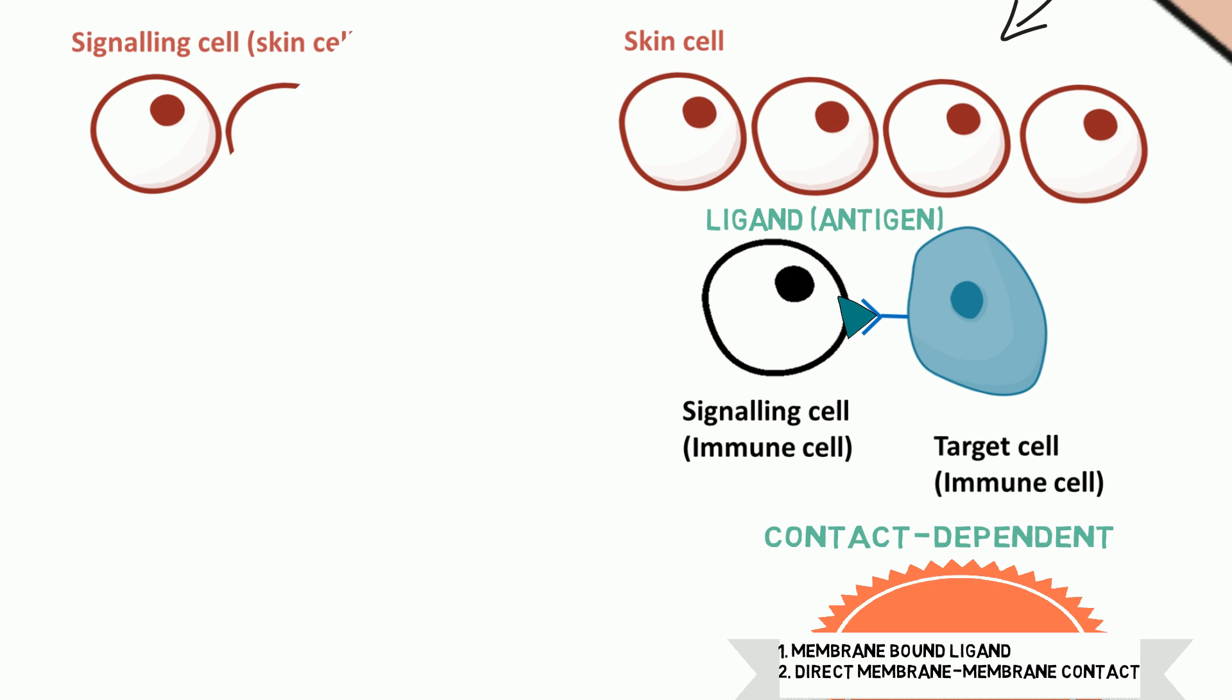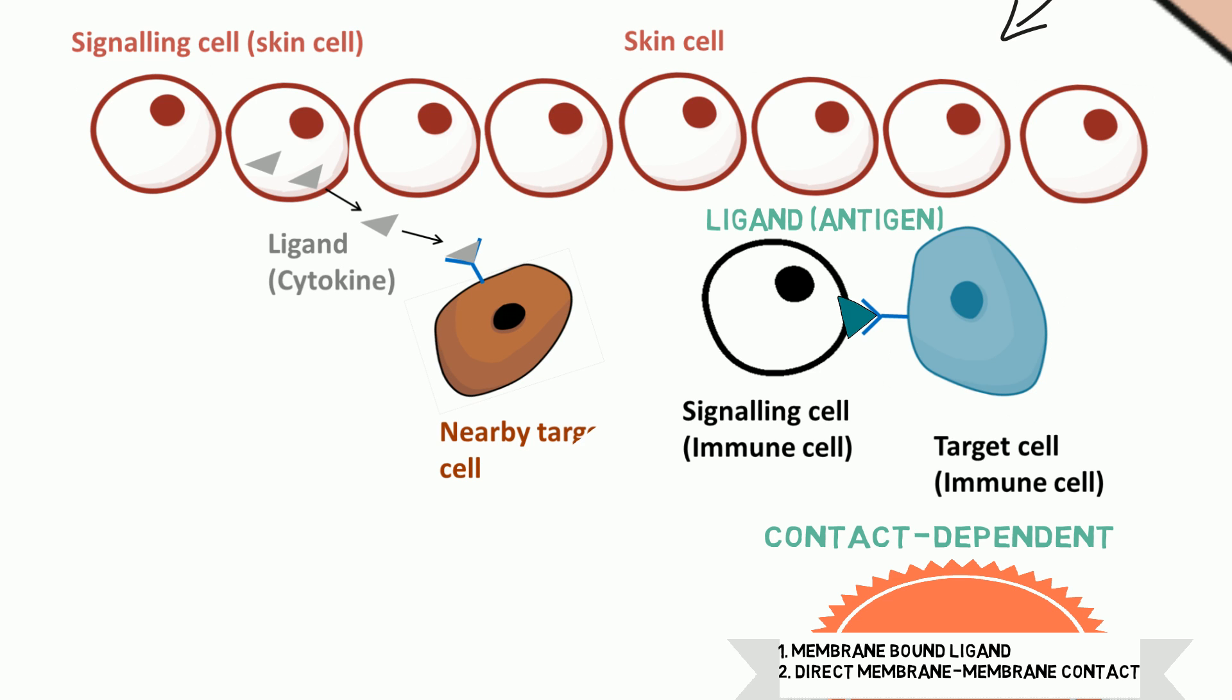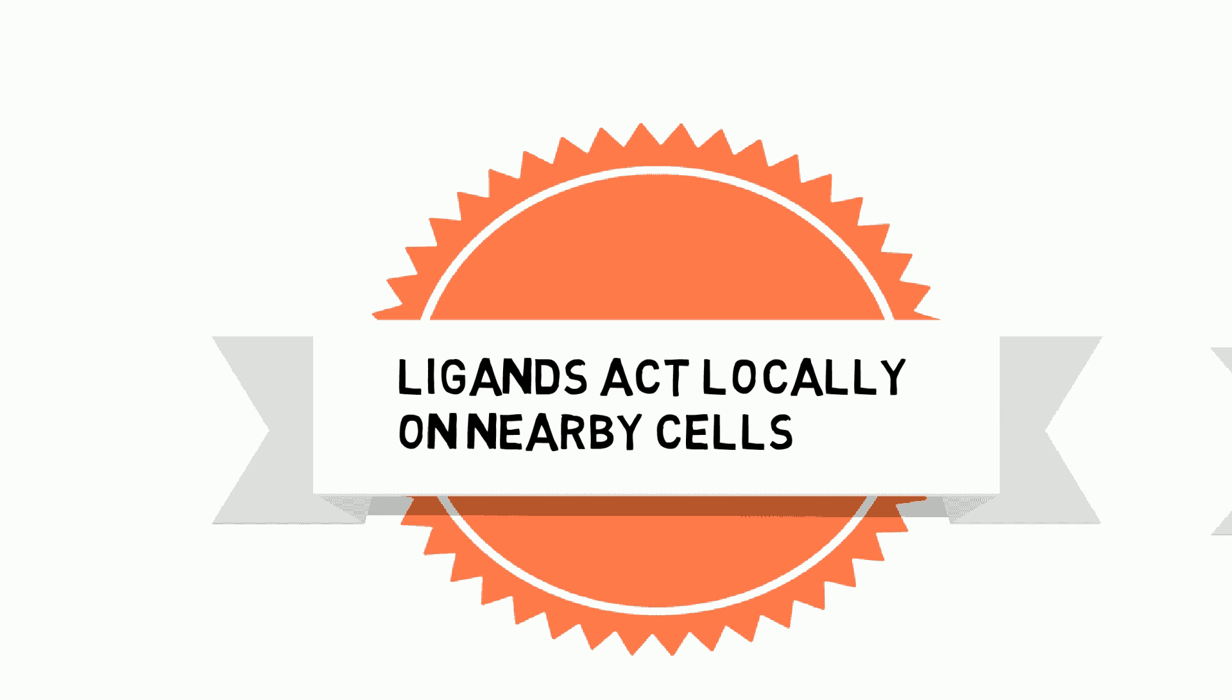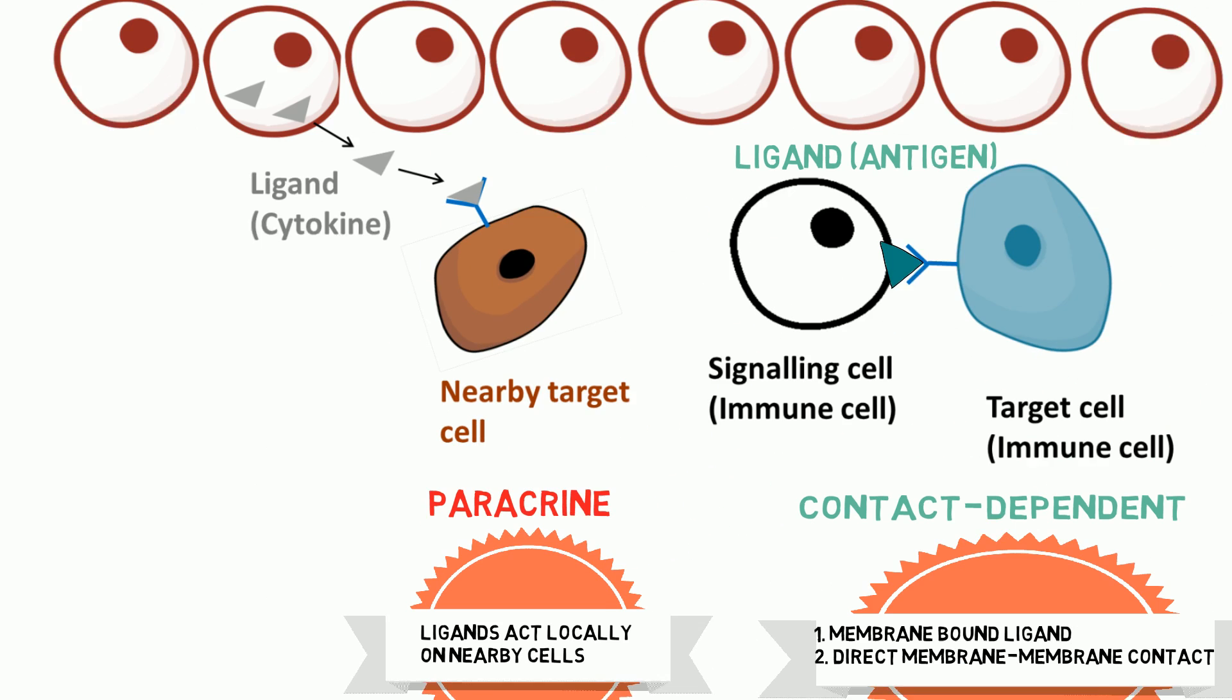The skin near the site of a bee sting becomes red and swollen. This is because skin cells release inflammatory molecules known as cytokines, which act as signal molecules that diffuse over short distances and act locally on nearby target cells. Such local signaling is known as paracrine signaling.